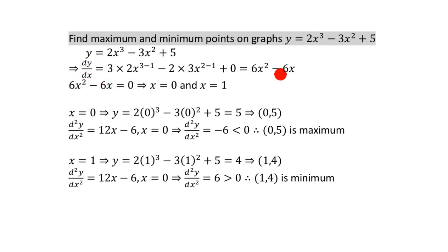Differentiating the first time gave you 6x squared minus 6x. Differentiating again, getting the second differential, means bring the power forward again. So 2 times 6, which is 12x to the power of 1, because you take away 1 from the power, gives you 12x. And this simply differentiates to minus 6.